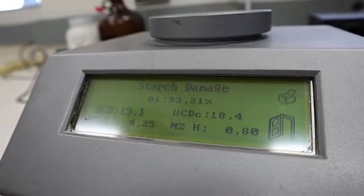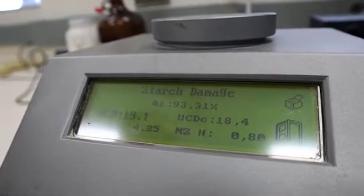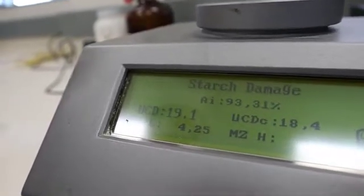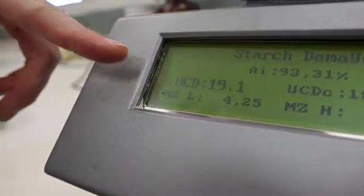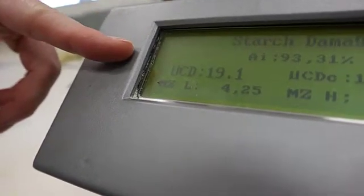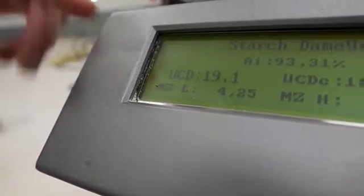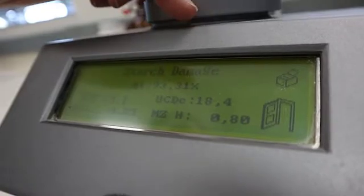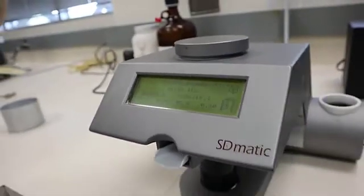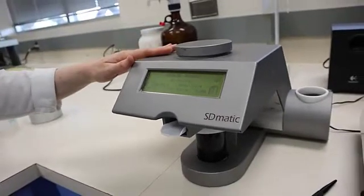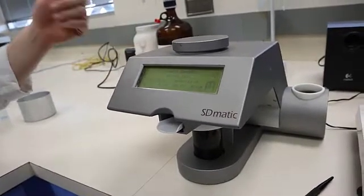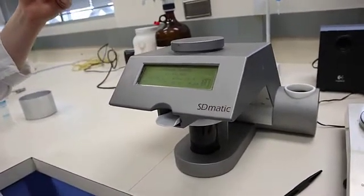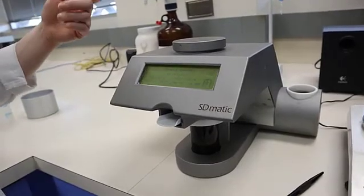The standard reporting value for SD-Matic is the Chopin-Dubois unit, so UCD. Uncorrected, that value is 19.1% for this sample. Corrected for moisture content and protein content, that value is 18.4%. Additionally, you can have an integrated calibration put into the unit as well that provides AACC percent starch damage and Farrand units as well.